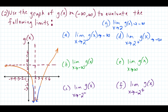Now, the limit as x approaches negative infinity of G of x — this tells us to keep going to the left. As we continuously go to the left, notice the graph is getting cut off. There's a ceiling at y equals 3, and the graph is not going above y equals 3 — we have a horizontal asymptote. So the limit as x approaches negative infinity of G of x is equal to positive 3. For the limit as x approaches positive infinity of G of x, as x goes to infinity the graph is just heading up continuously. There is a horizontal asymptote but the graph went through it and is heading up to infinity.